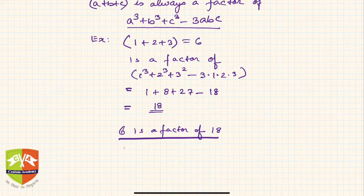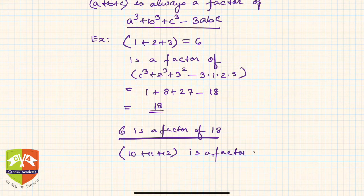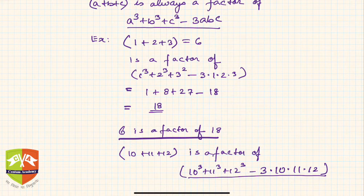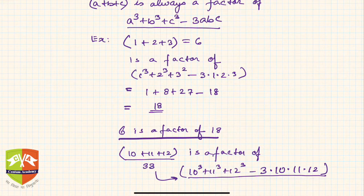Similarly, 10 + 11 + 12 = 33 must be a factor of 10³ + 11³ + 12³ - 3×10×11×12. This is a very large number, but without doing actual division, we can say 33 is a factor of it. This is the usefulness of this identity.